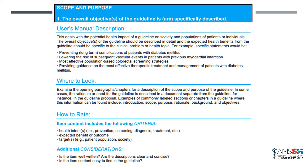The manual also gives you the criteria. For this particular item, the specific criteria are: health intent — is this a prevention, screening, diagnosis, or treatment? What is the expected benefit or outcome? And what is the target — is it a population, society? The manual also provides additional considerations. Honestly, every single additional consideration for every item includes: is the item well written, are the descriptions clear and concise, and is it easy to find in the guideline? Some items have additional considerations particular to that topic, which are still important to think about and worth considering when you're doing your grading.